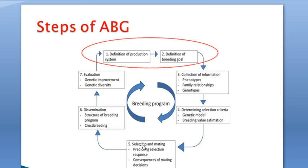Once this is done, the genetic improvement program is carried on and the products from the selection or mating are disseminated. At the end of the day, the results of the whole program are evaluated and analyzed to give new orientation to the next step, either to continue with what is set or to revise it with a view to improving it.